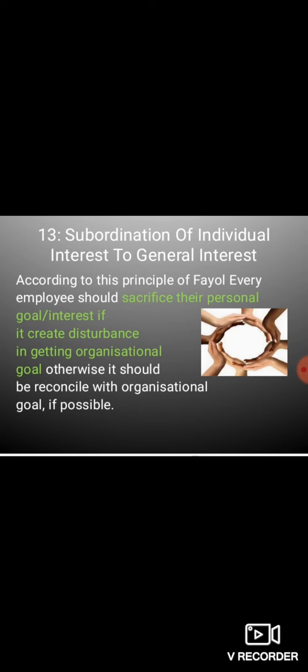Next principle of Fayol is Subordination of Individual Interest to General Interest। इस principle में Fayol ने कहा कि यदि किसी employee का personal goal organizational goal को disturb कर रहा है, तो पहले उस employee को अपने personal goal को organizational goal के साथ reconcile करने की कोशिश करनी चाहिए। यदि वो reconcile नहीं कर सकता तो उसे अपने personal goal को for the betterment of organization sacrifice कर देना चाहिए।